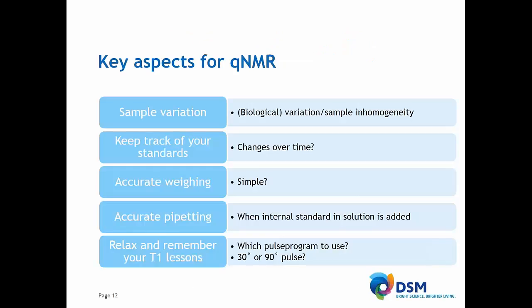Well, there are several key aspects for QNMR and I want to discuss a couple of them. For instance, sample variation — I work at DSM in a biotech center and there we have a lot of biological variation. Also, sample inhomogeneity is something that can happen of course with any type of process, and you need to be aware of this when you are doing QNMR. Taking a correct sample is not as easy as is sometimes thought. It's also good to keep track of your standards — nowadays you can buy qualified standards from several vendors, but you should also check if they change over time.